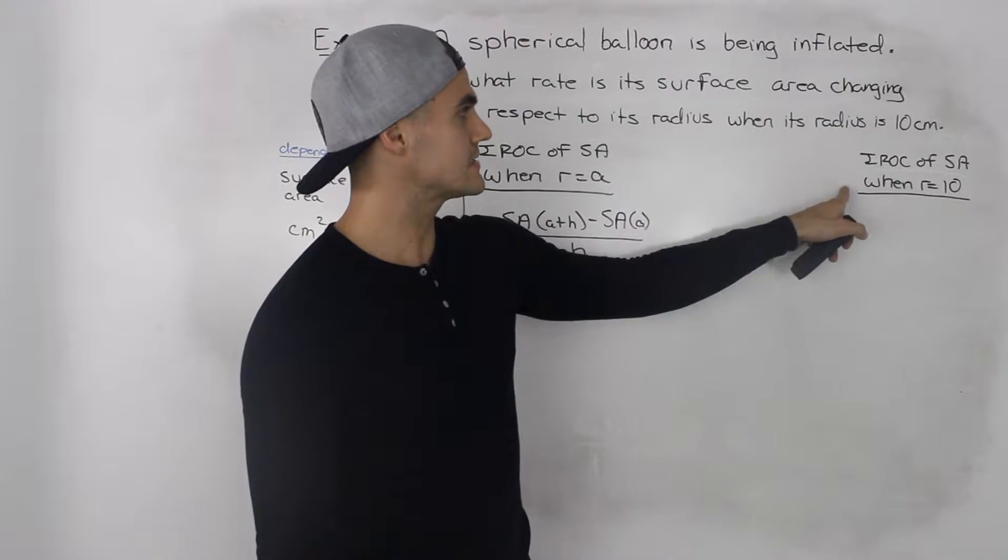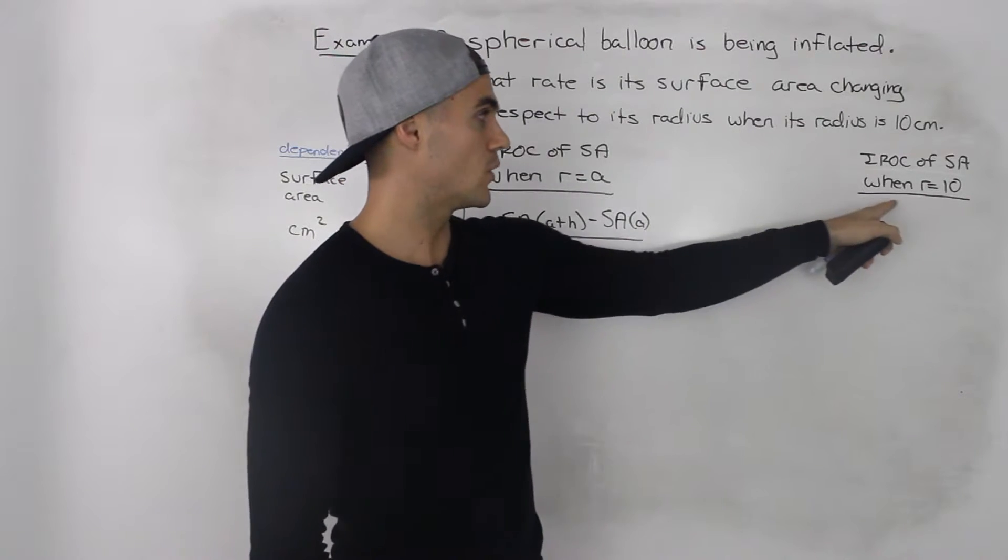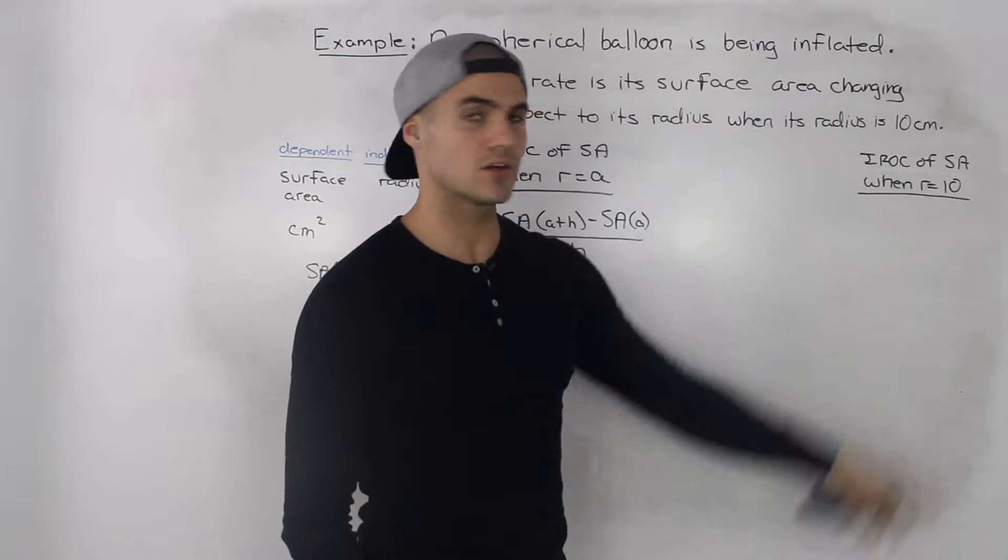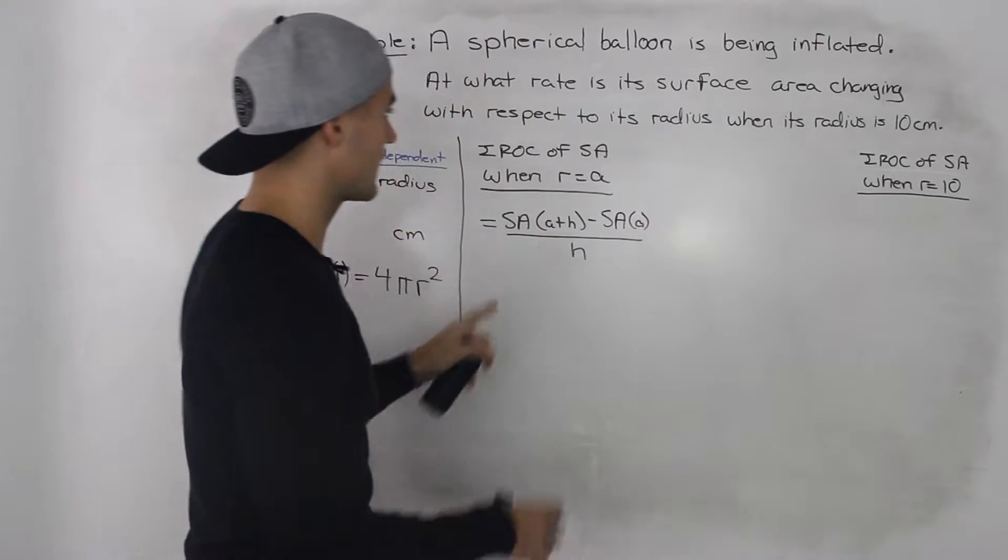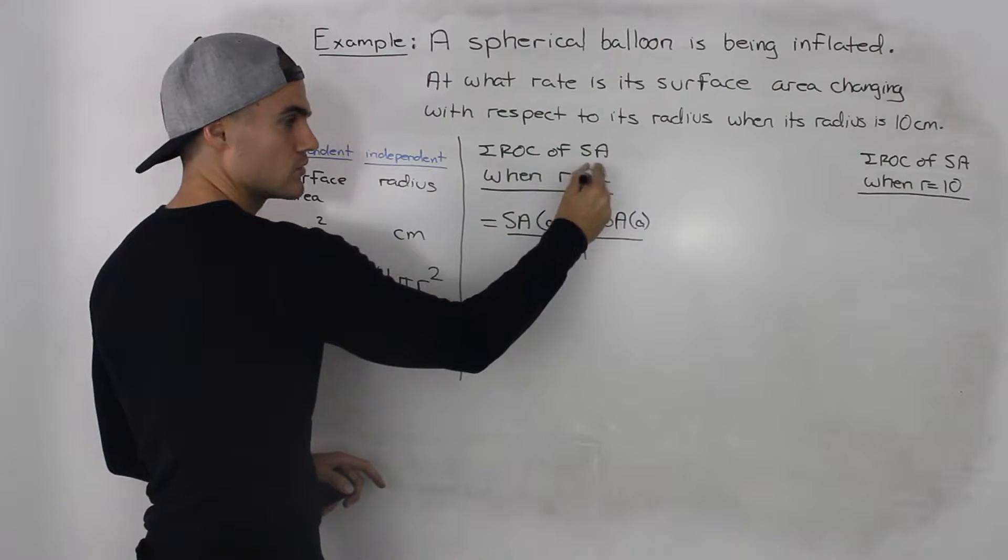So ultimately what we want to find is the instantaneous rate of change of the surface area of the sphere when the radius is equal to 10 centimeters. But before we do that let's find the instantaneous rate of change of the surface area when the radius is some general value a.